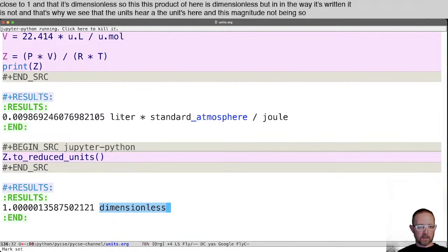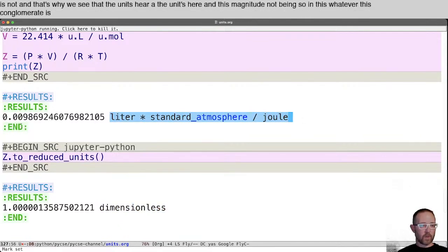So in this, whatever this conglomerate is, this is correct. But by the time you do all of the manipulations to get it to be dimensionless, we get down to here.